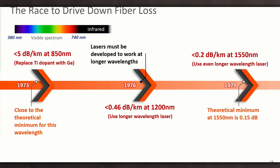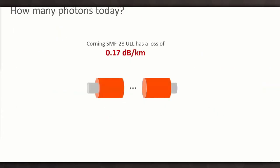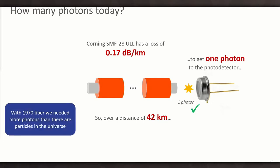Then finally, we get to the wavelengths that we use today. 1,550 nanometers, that was possible by the end of the 70s. And the attenuation of the fiber at that time was about 0.2 dB per kilometer, and the theoretical minimum is 0.15. And in fact, we're getting quite close to that now, because commercial SMF-28 ultra-low loss is already at 0.17 dB per kilometer. So now, with this wonderful low-loss fiber, how many photons would we need for 42 kilometers? With the 1970 fiber, we would need more photons than in the observable universe. But with this low-loss fiber, we only need five photons.